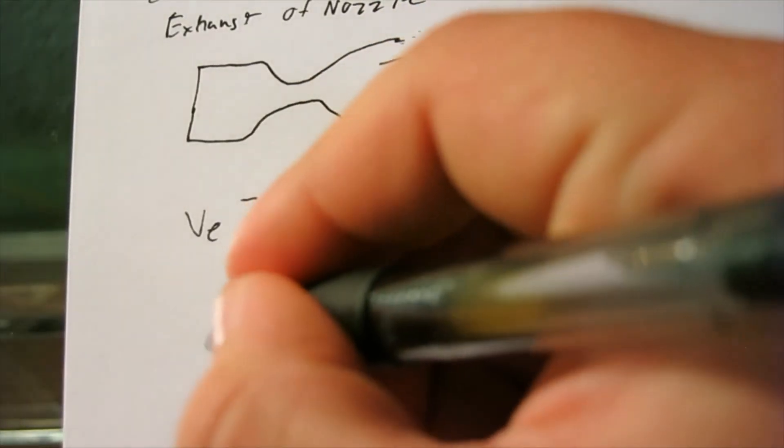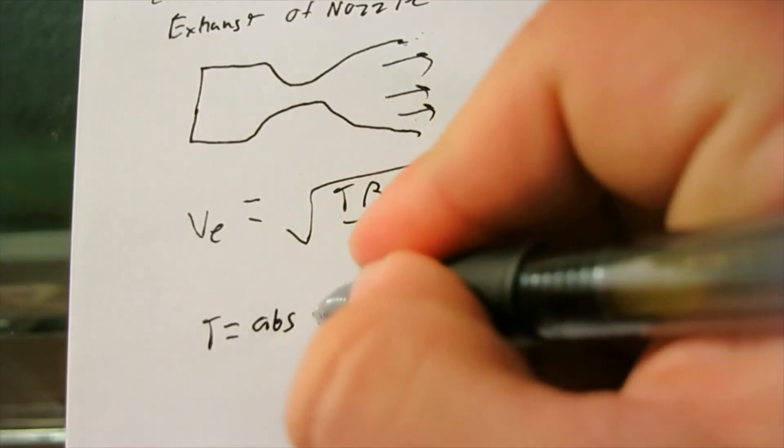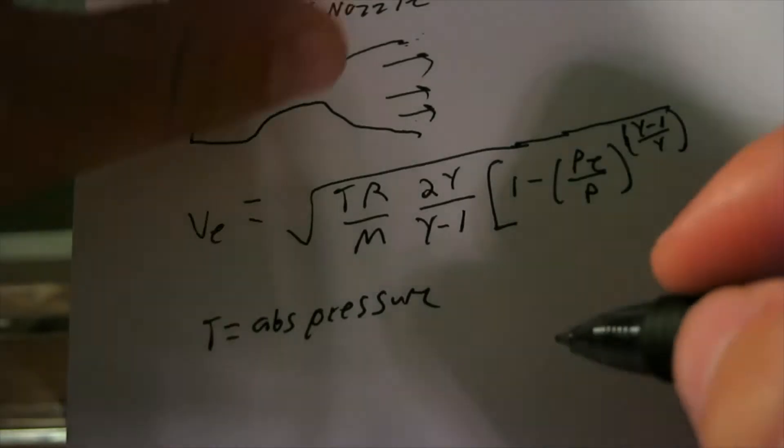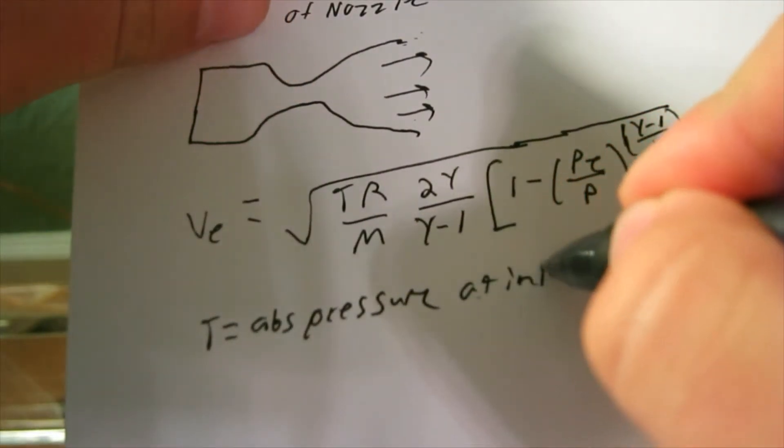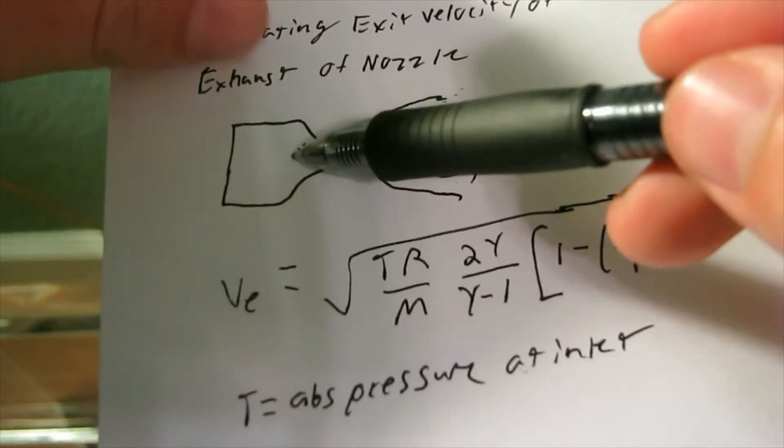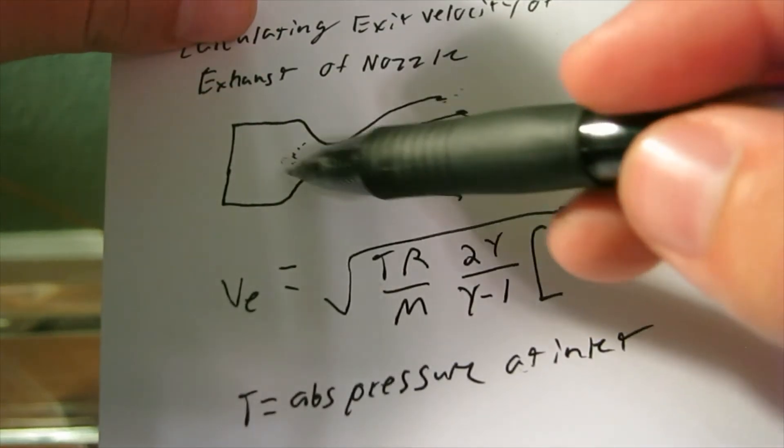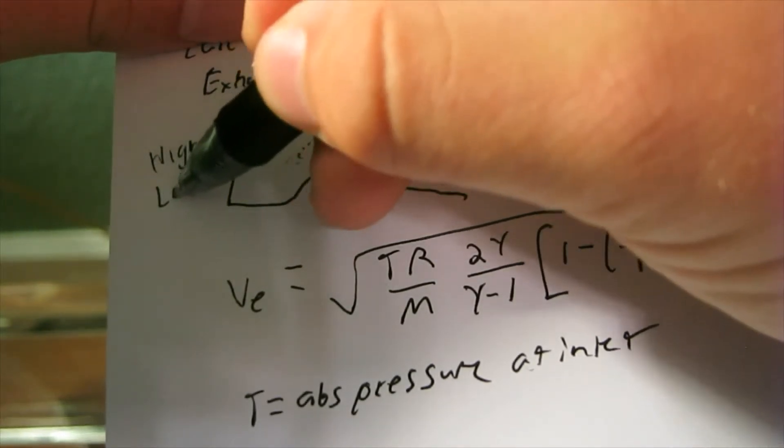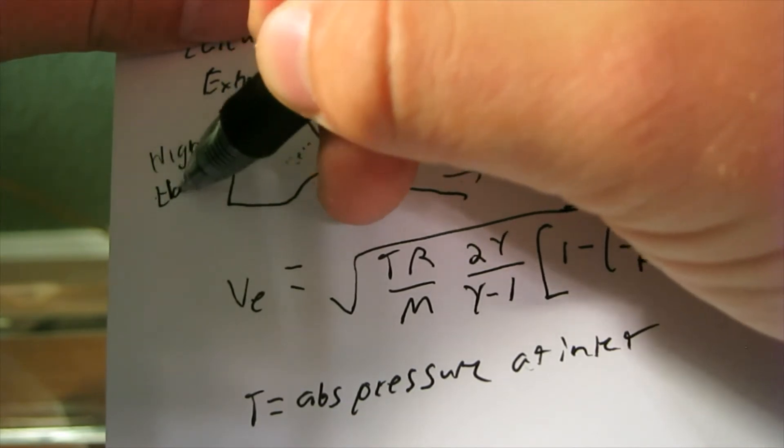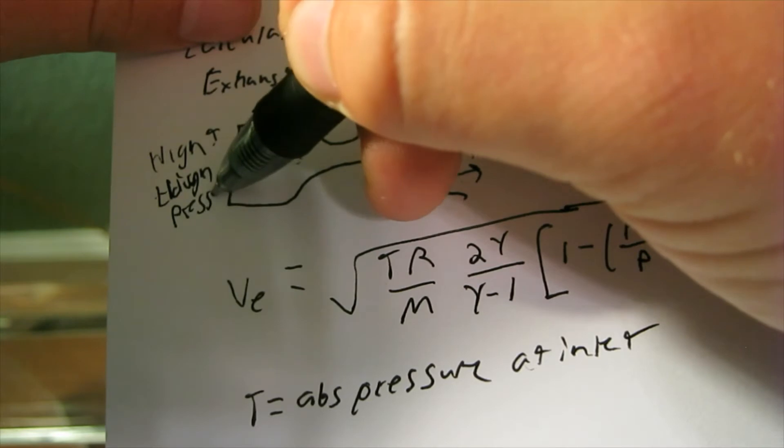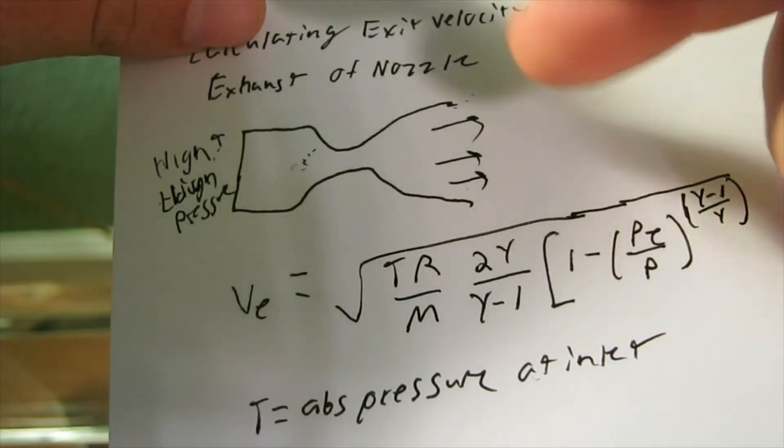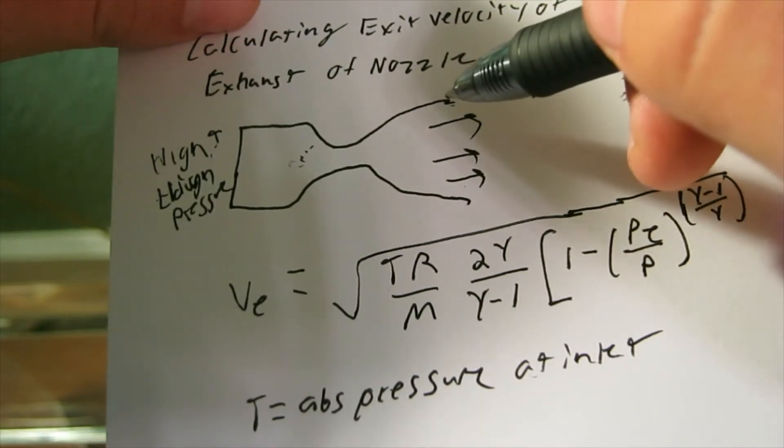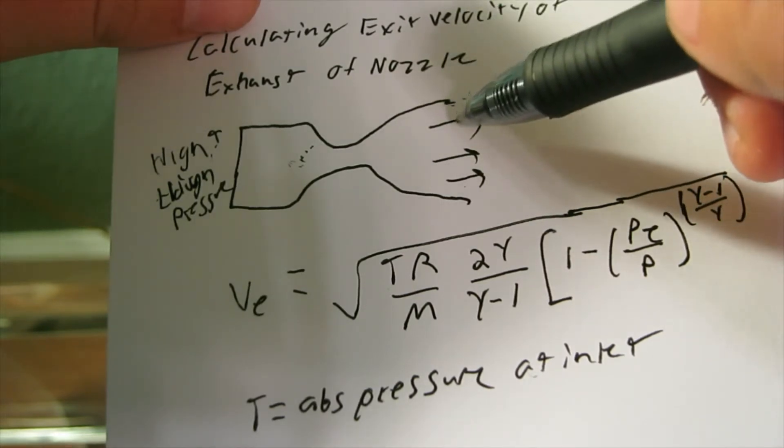Our T variable equals the absolute pressure, so absolute just means in the terms of Kelvin, at the inlet. This is like in the combustion chamber. And we know that for a converging diverging nozzle, we have high temperature, high pressure, low velocity. And then out here at the exit, we have relatively low temperature, low pressure, and high velocity.